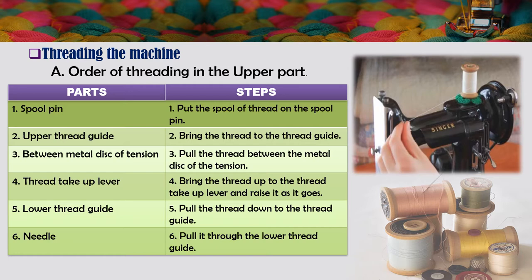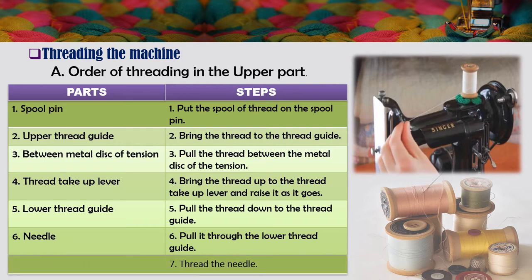Number four: bring the thread to the thread take-up lever and raise it as it goes. Number five: pull the thread down to the lower thread guide. Number six: pull it through the lower thread guide. Last step: insert the thread into the needle eye.